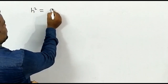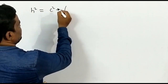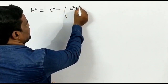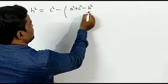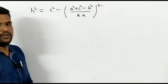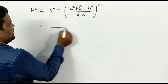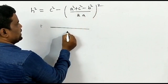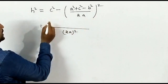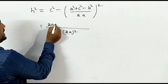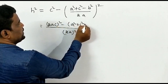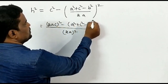Substituting X into equation 1, we get: H² = C² − [(A² + C² − B²) / 2A]². The denominator becomes (2A)² = 4A², so: H² = [(2AC)² − (A² + C² − B²)²] / 4A².